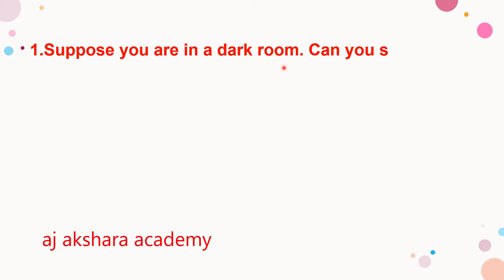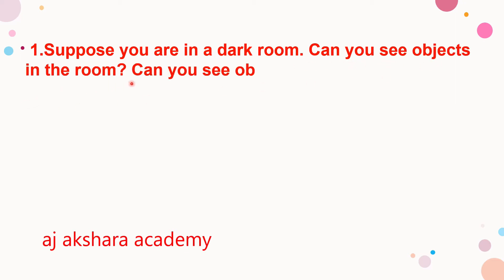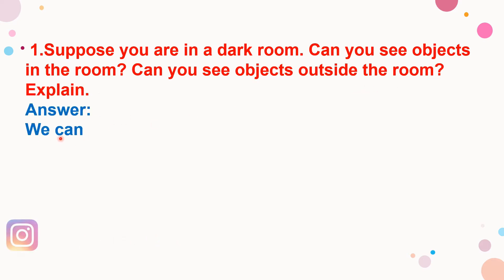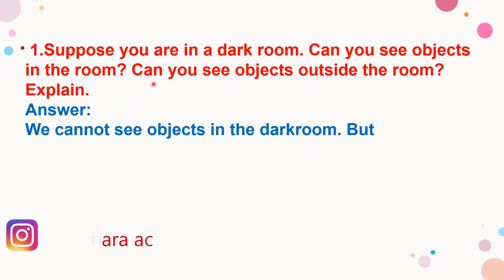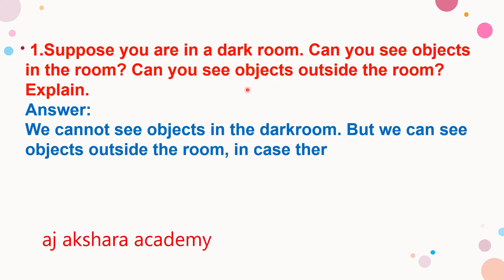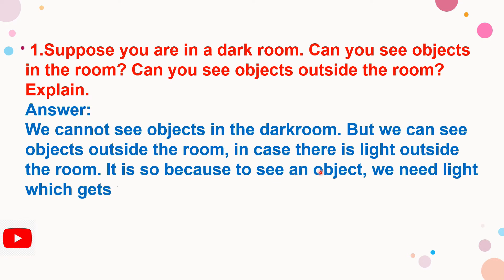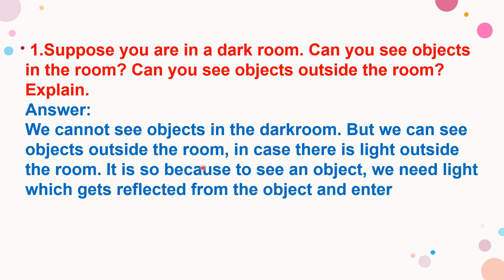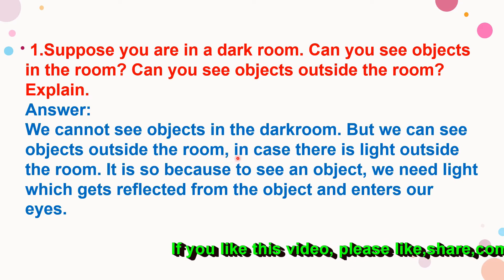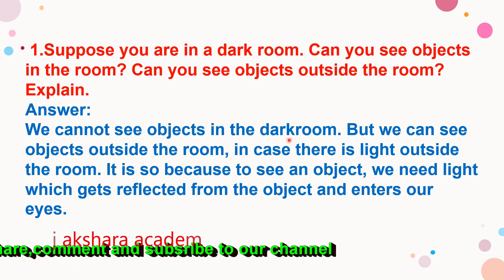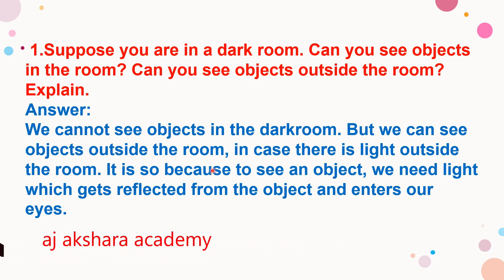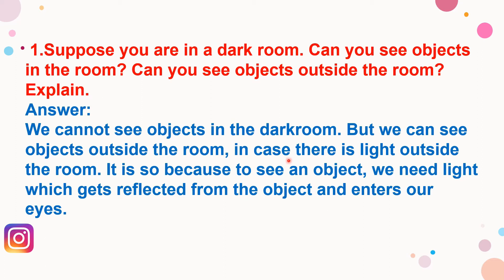First question: suppose you are in a dark room — can you see objects in the room? Can you see objects outside the room? In a dark room we cannot see the objects. But we can see objects outside the room in case there is light outside. In the dark room there is no light, so there are no images and we cannot see any objects.